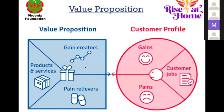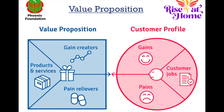What I just shared relates to another IDEO tool: value proposition. When we begin to understand our beneficiary or customer, we focus on three things: customer jobs — what they are doing — and two key areas: how we can enhance their happiness, their gains, and how we can help relieve their pains.